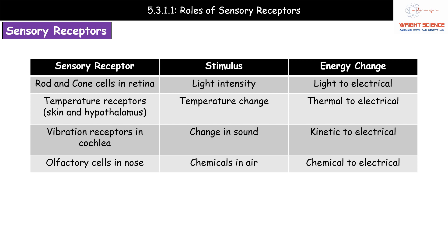In both cases, the rod cells and cone cells on our retina are detecting the stimulus of light intensity. When we consider the energy change that makes them a transducer, they take the light energy entering our eyes and convert it to electrical energy.